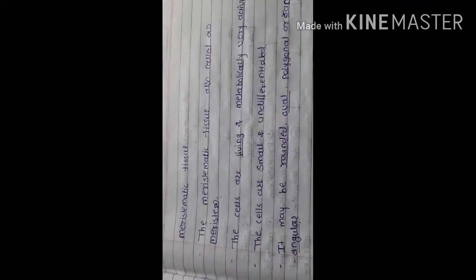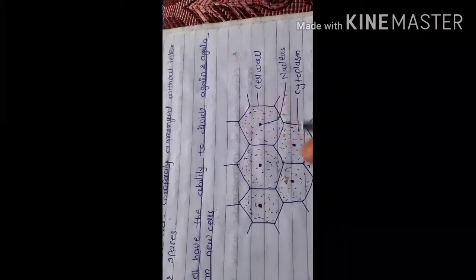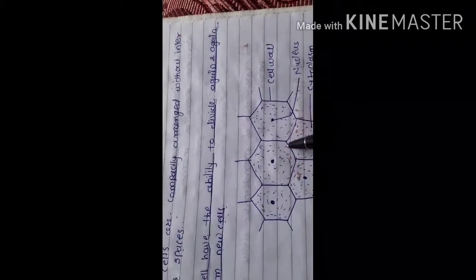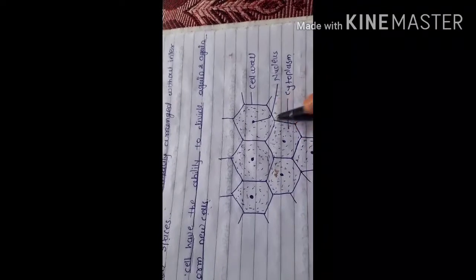The last and important characteristic feature is that the cells have the ability to divide again and again to form new cells. In the diagram of this meristematic tissue, a dense prominent nucleus is present along with dense cytoplasm, and the arrangement of this tissue is compact.